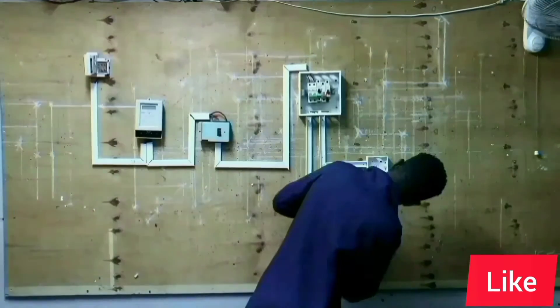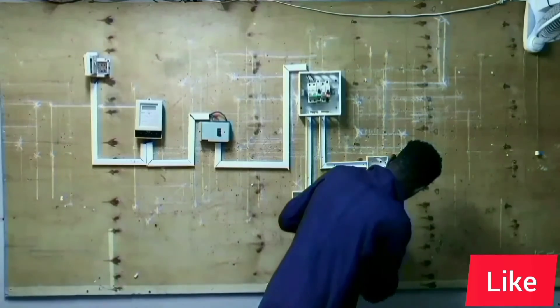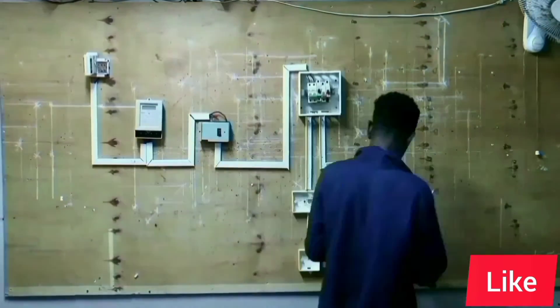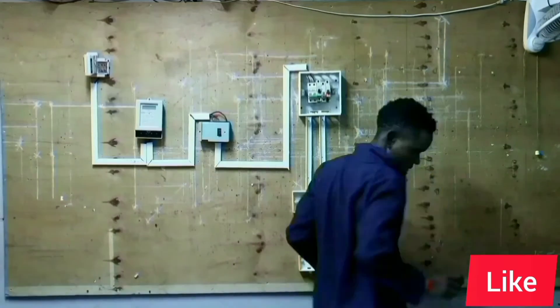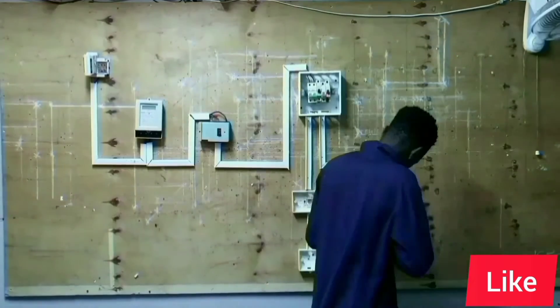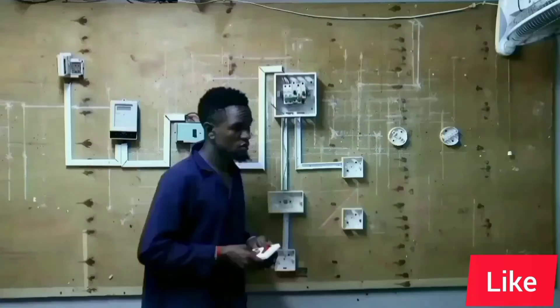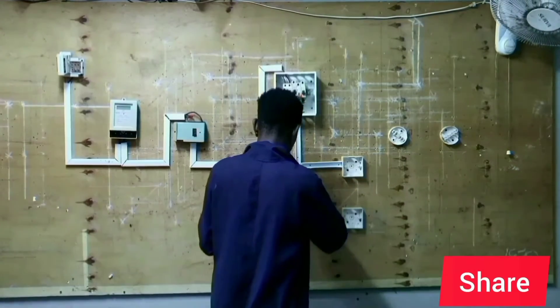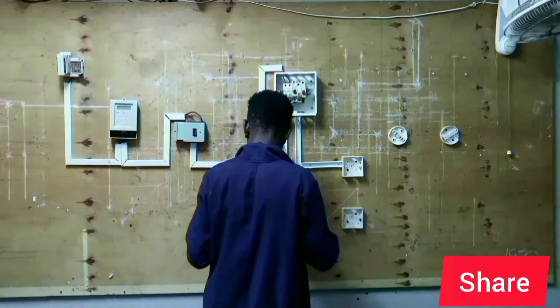To connect our 13 amp socket outlets we use a cable of 2.5 mm² and we connect to the 12 amp MCB in our distribution box. This is where we connect to normal electrical appliances like TVs.